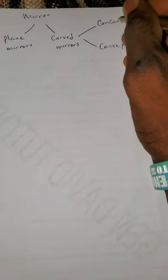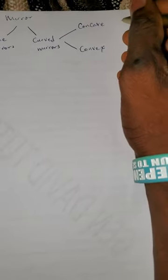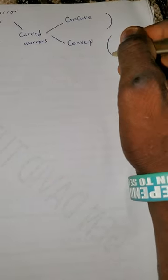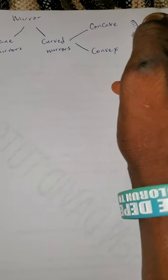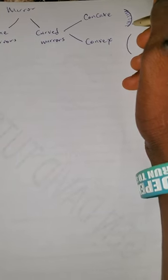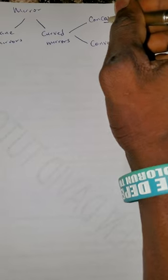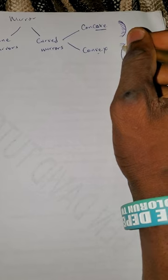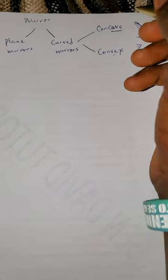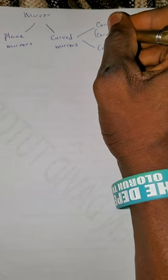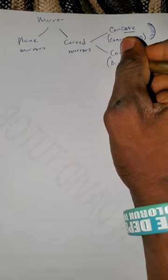Both are curved mirrors. The reflective side of the concave mirror is the side that curves inward — that's why we say it curves like a cave. For the convex mirror, the reflective side curves outward. The concave mirror has the property of converging, while the convex mirror has the property of diverging.